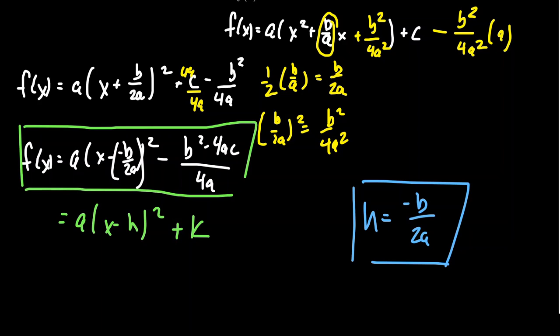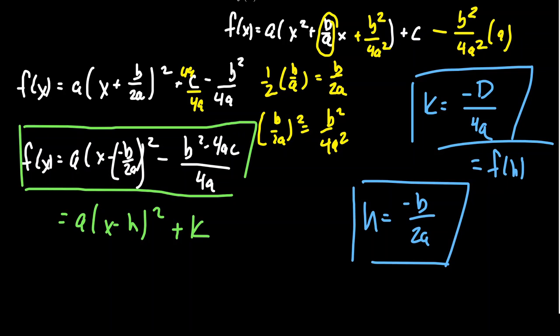Now, if you want to, we could also get a formula for k, which is going to look like negative the discriminant over 4a. You can use that if you want to. That's not what I necessarily tell anyone to memorize because there's a simpler approach here. If I know what h is, then k is just f(h). I could just plug h into my quadratic function and compute that, and that'll give me the k value. This one's a lot simpler here.